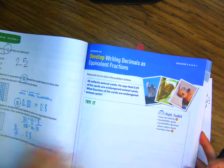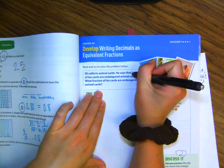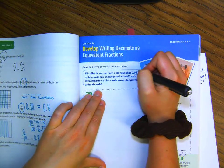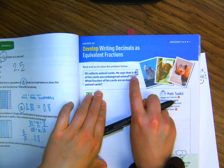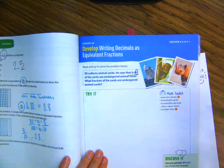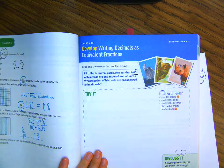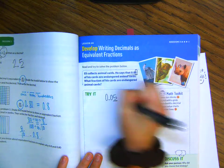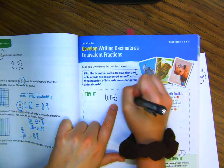Just the problem on page 545. It says, Eli collects animal cards. He says that five hundredths of his cards are endangered animal cards. I know this is five hundredths, because it's two decimal places over from the right of the decimal point. What fraction of his cards are endangered animal cards? What fraction? So, if I just need to put this as a fraction, I know that this is in the hundredths, so my denominator is a hundred, and then five. Five hundredths.